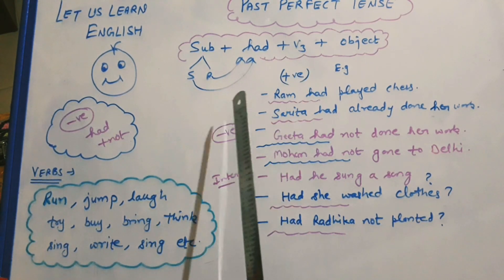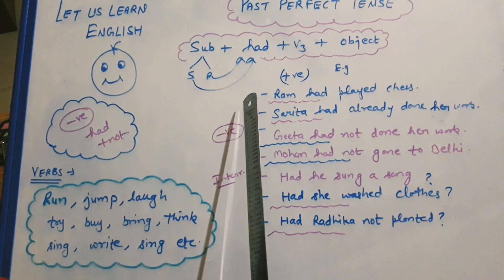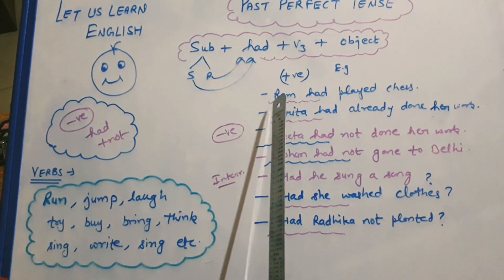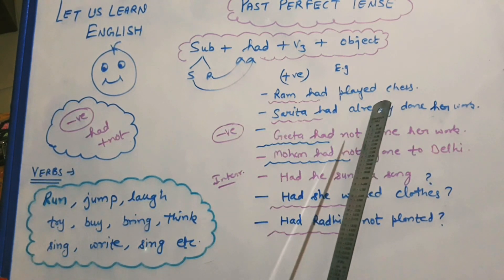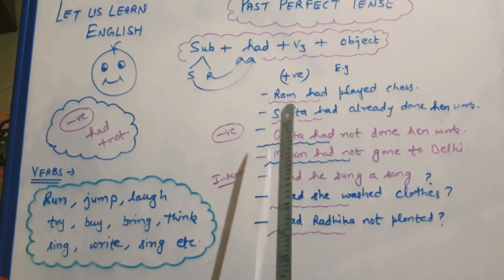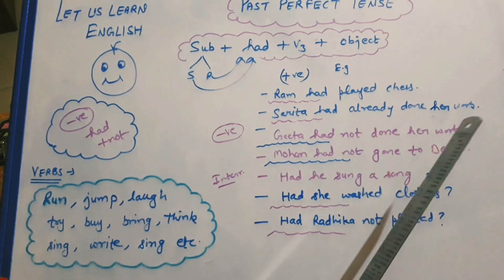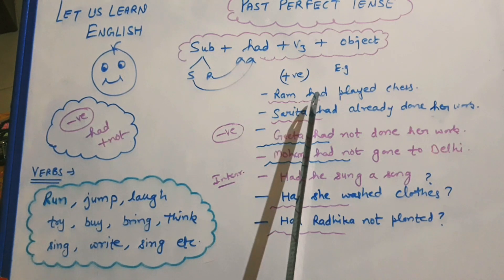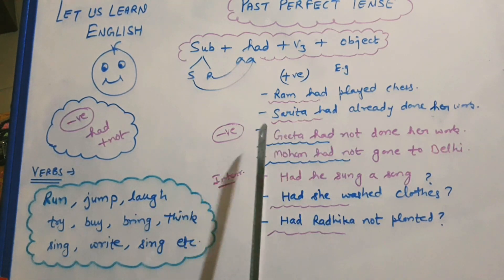Let us take the example of the positive sentences — the simple sentences. Ram had played chess. Sarita had already done her work. Here, this is the subject, this is had, and this is V3.